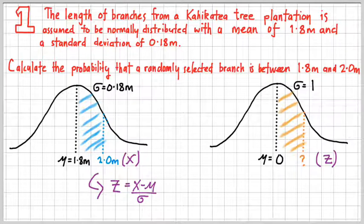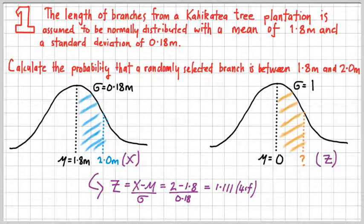So there we go, z equals x minus mean, which is the m there, divided by the standard deviation. Now, I've also put in brackets there, x next to the 2 metres, because that's the value that we're going to use. We know what the mean is of 1.8, and we know what the standard deviation is of 0.18. So, carefully putting that into our calculator there. Those are the values, and what you will get is that answer there. And so on our new diagram, on the standard normal distribution diagram, you can replace our question mark with that number there.